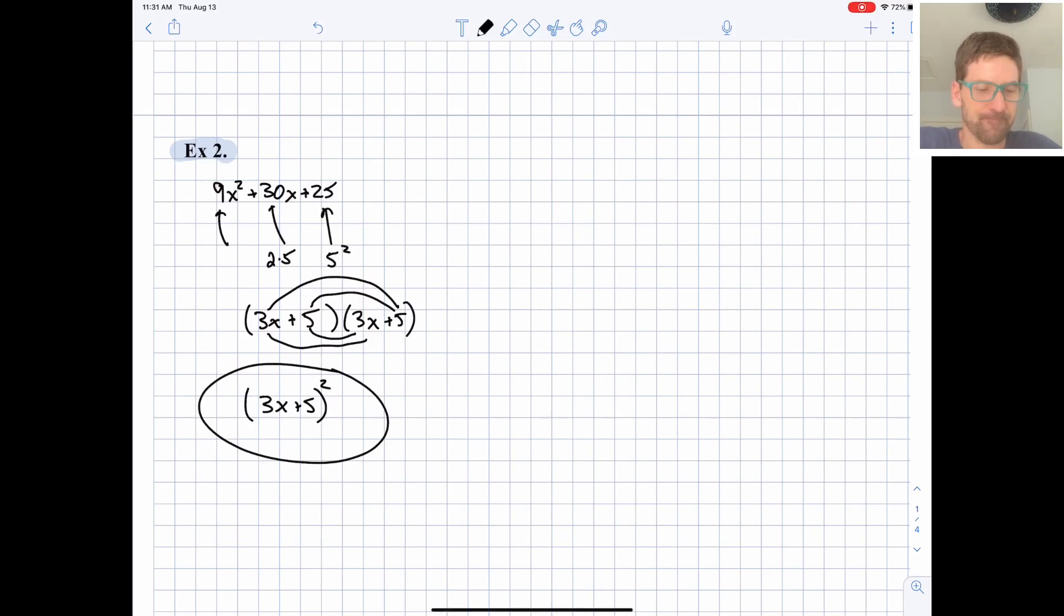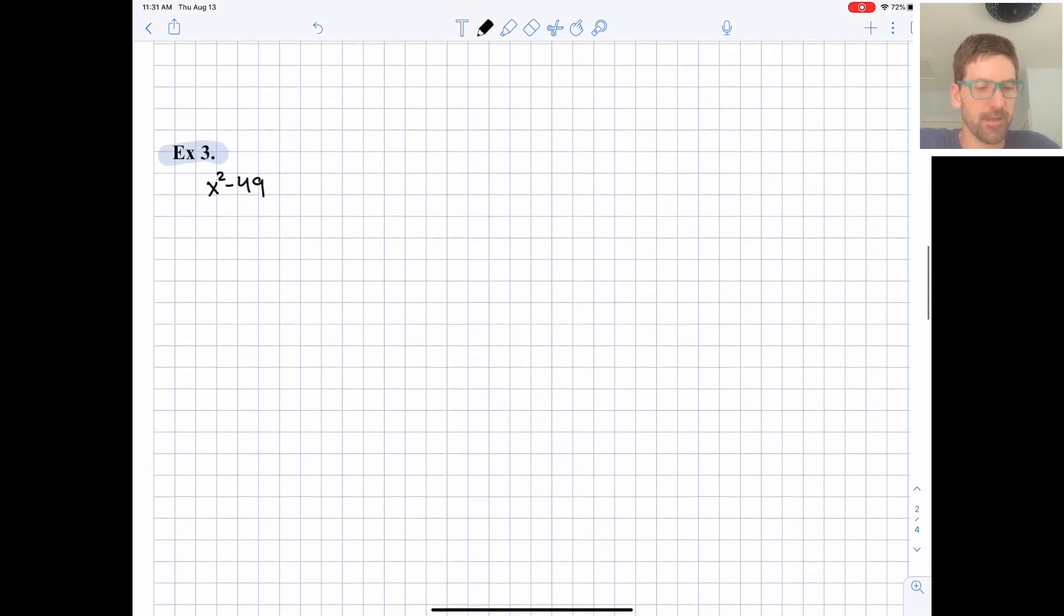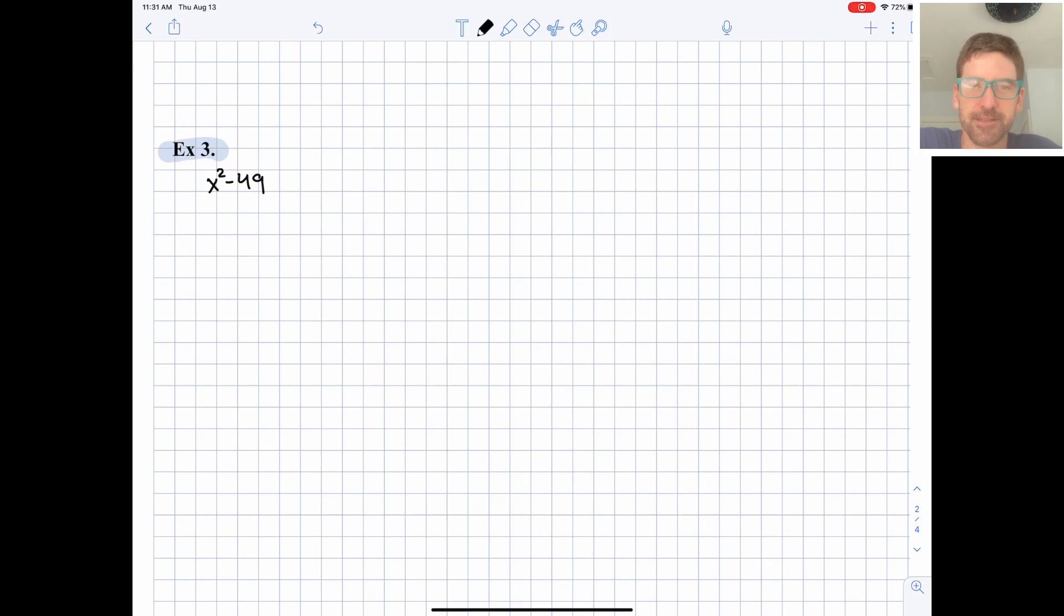Difference of two squares. These are always kind of fun because I see them and I know it's going to be just so easy. This is just going to be (x + 7)(x - 7). Difference of two squares—subtraction means difference—and we have a perfect square: x² is x times x, and 49 is 7 times 7.